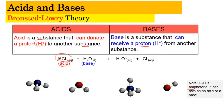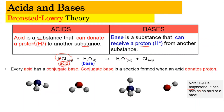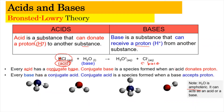When discussing the Bronsted-Lowry theory, we need to talk about conjugate acids and conjugate bases. Every acid has its partner, the conjugate base — a species formed when the acid donates a proton. So here, HCl is the acid; when it donates a proton, it becomes Cl⁻, which is the conjugate base. For every base, there is a conjugate acid — a species formed when the base accepts a proton. When water accepts the proton, it becomes H₃O⁺, the conjugate acid.